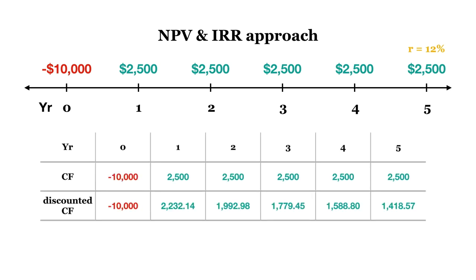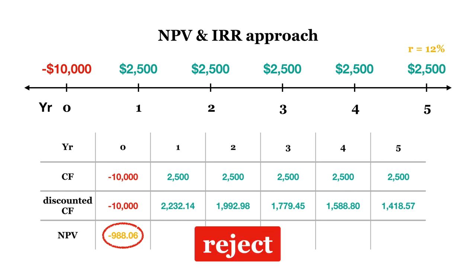Firstly, because the project is similar to ones that the firm has taken on in the past, we can assume that the firm's discount rate is also appropriate in capturing the riskiness of the project. By discounting the future cash flows of the project to date 0 using the given discount rate, we discover that the NPV of the project is negative. Thus, this means the firm will reject the project because the project will make the firm worse off by negative $988.